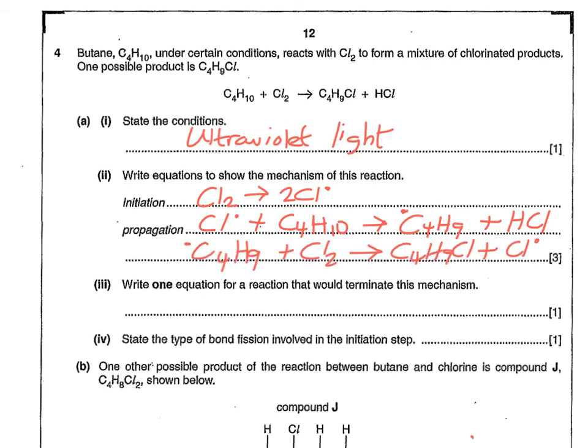Then the butyl radical goes back and attacks a fresh chlorine molecule to produce C4H9Cl, or chlorobutane, and it regenerates Cl dot, regenerates the chlorine radical that was used in the first propagation step.